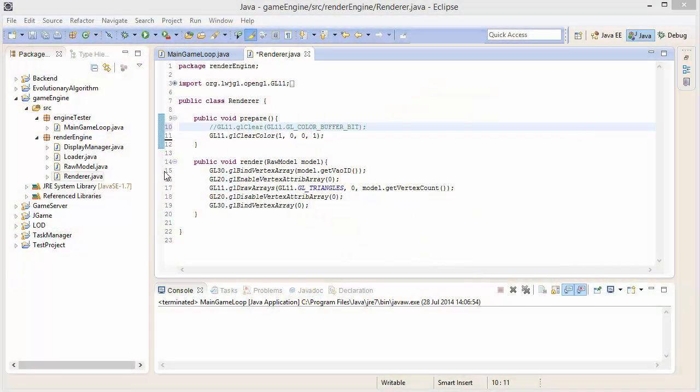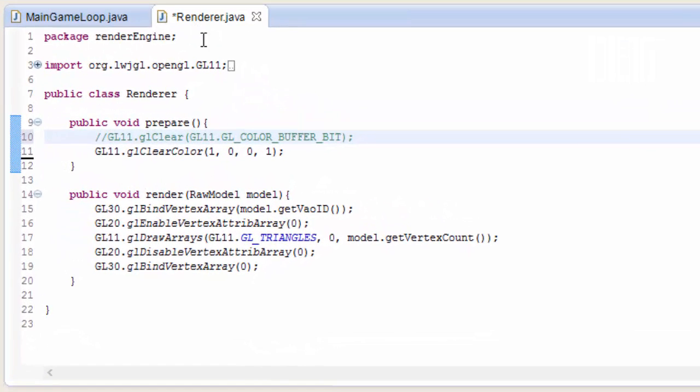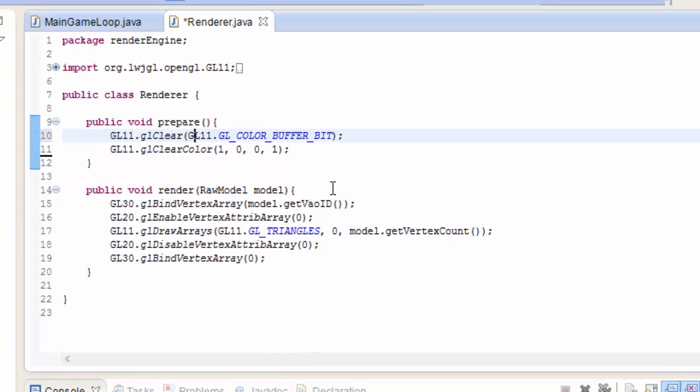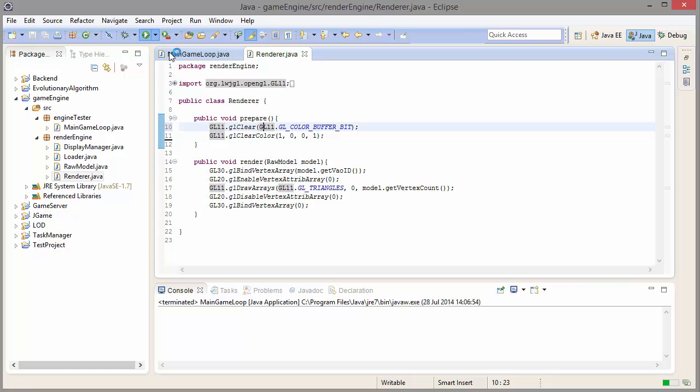But before we get started on that, there's one little thing from last week that I need to correct. If you go into your renderer class, you need to add one more line in the prepare method. I managed to forget it last time, so let's add it in now. This just clears the color from the previous frame. So go ahead and run that to check that it's working, and there you go.